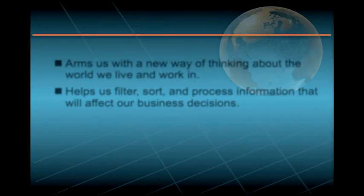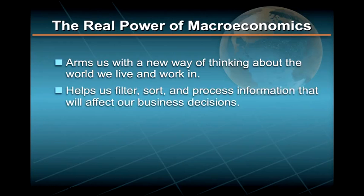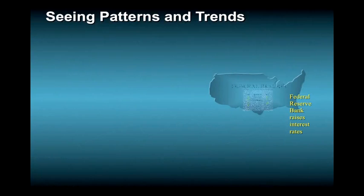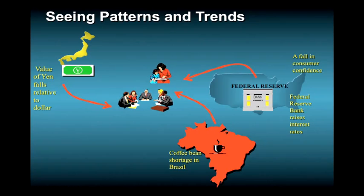Macroeconomics can help answer these questions because it arms us with a new way of thinking about the world we live and work in. This is the real power of macroeconomics — it helps us filter, sort, and process all of the information we are bombarded with every day in the media: an interest rate hike here, a fall in consumer confidence there, a coffee shortage in Brazil, or a drop in the Japanese yen. From a macroeconomic perspective, all of these seemingly unrelated bits of information reveal patterns and trends, and ultimately courses of action which we might fruitfully follow or ignore at our own peril.